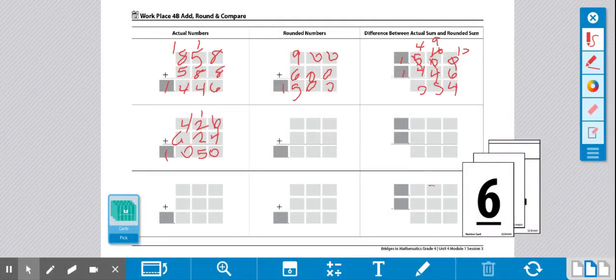And then we have to round them. 426. 2 is below 5, so we round down. So 400. And 624. The 2 is also below 5, so we round down to 600.